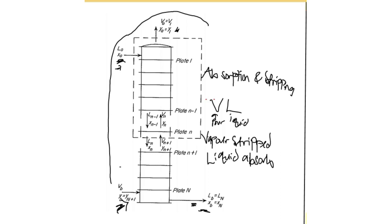For stripping, it's the same arrangement: the gas inlet is the bottom stream, the liquid inlet is the top stream, the gas outlet is the top stream, and the liquid outlet is the bottom stream. The notation La and xa: La is the mass flow rate of the liquid at the top inlet, and xa is the mass fraction of the content to be absorbed or stripped in that liquid stream.